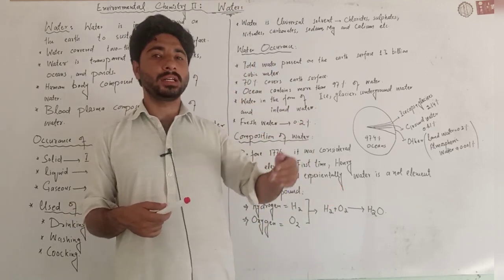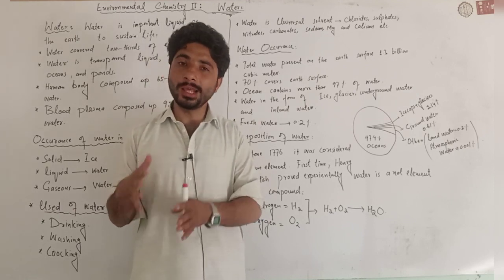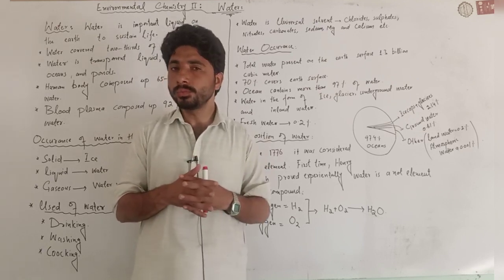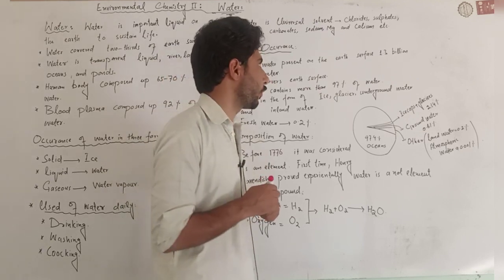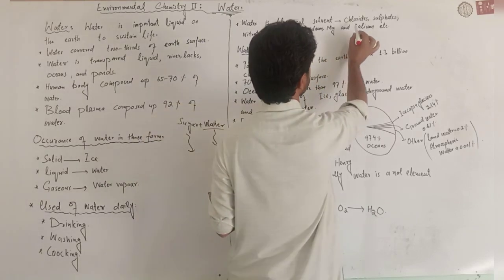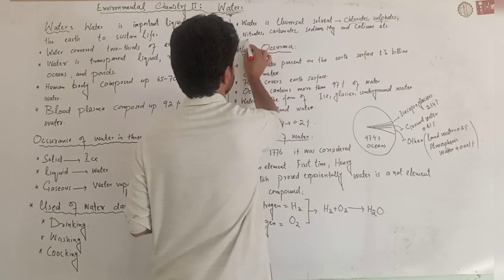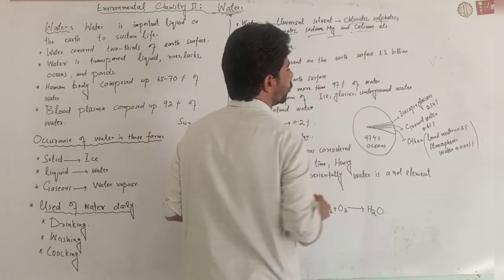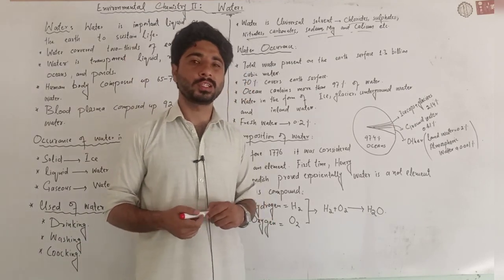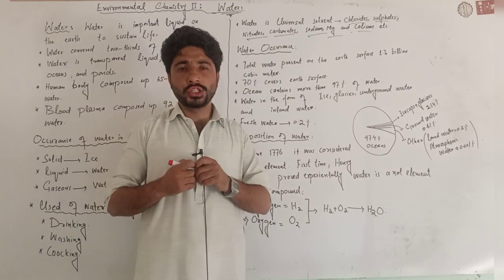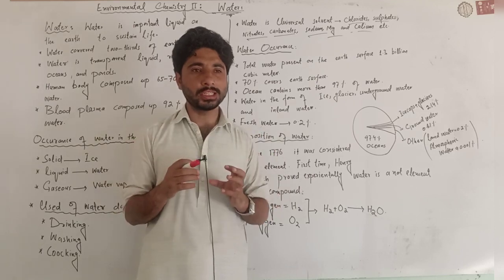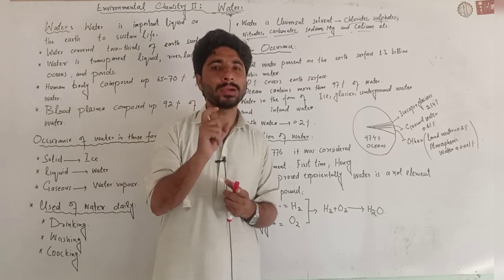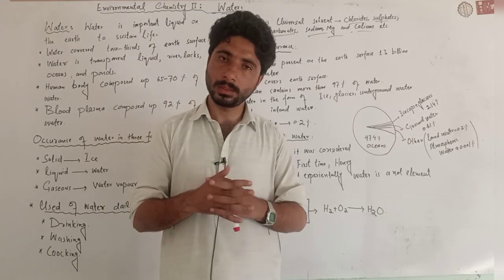Living things — humans, plants, animals — contain water. Water dissolves many substances. For example: chlorides, sulfides, nitrates, carbonates, sodium, magnesium, calcium, bicarbonates, and others. In the ocean, for example, there are many dissolved substances present in the water.